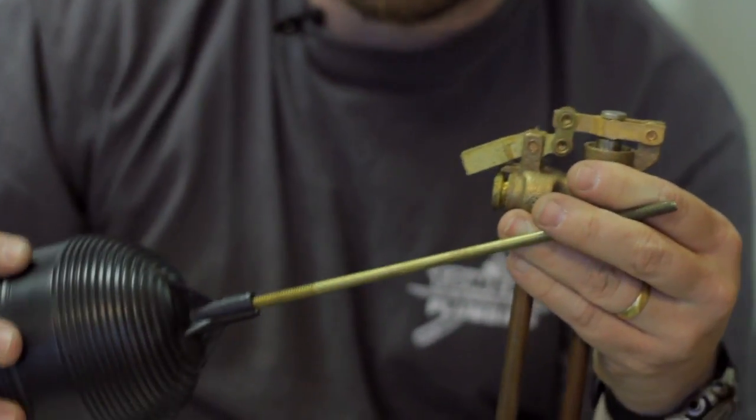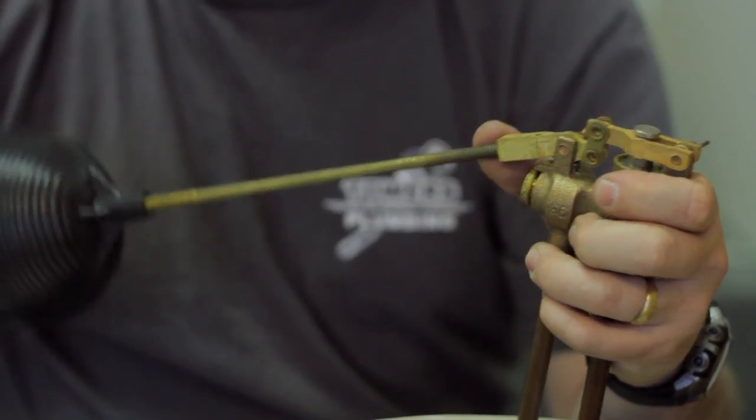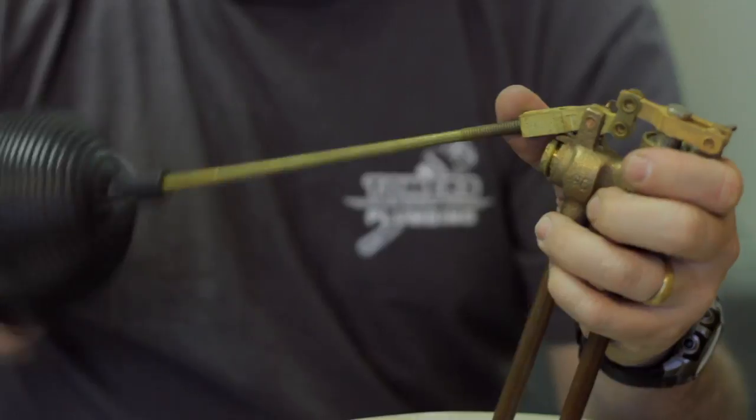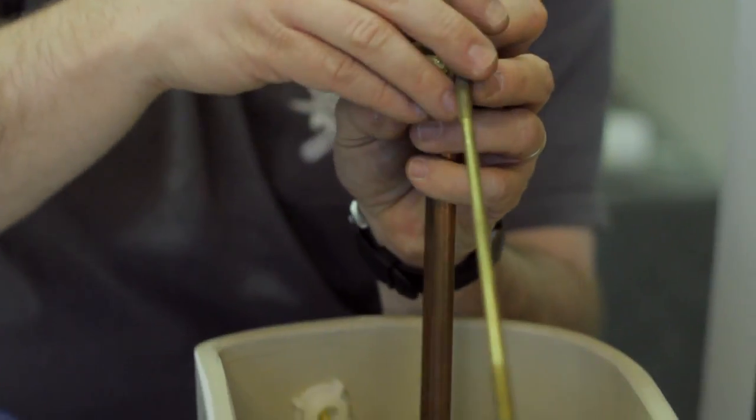Once you get your new float ball, screw it back onto the rod, back into the valve. And you don't always have to remove the valve itself when you're replacing just the float ball itself.